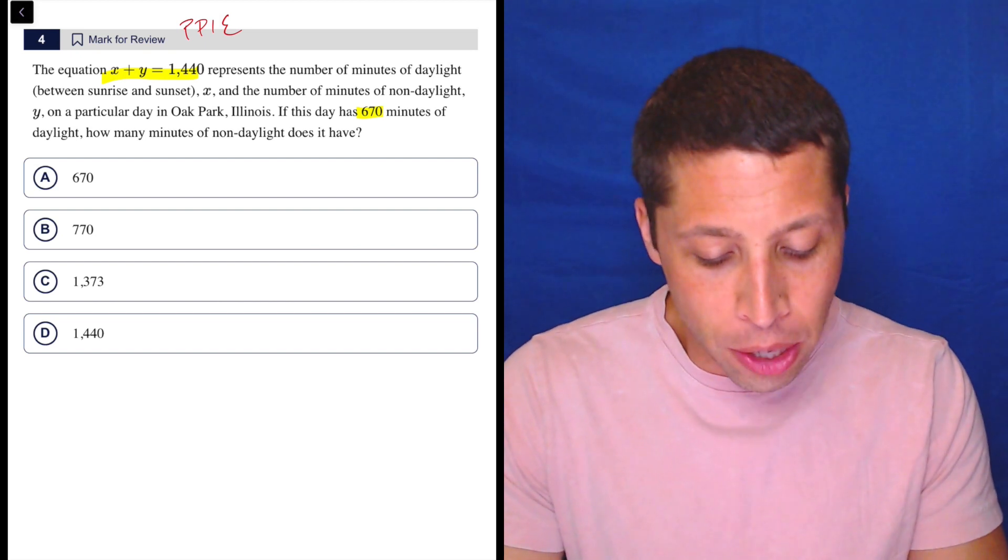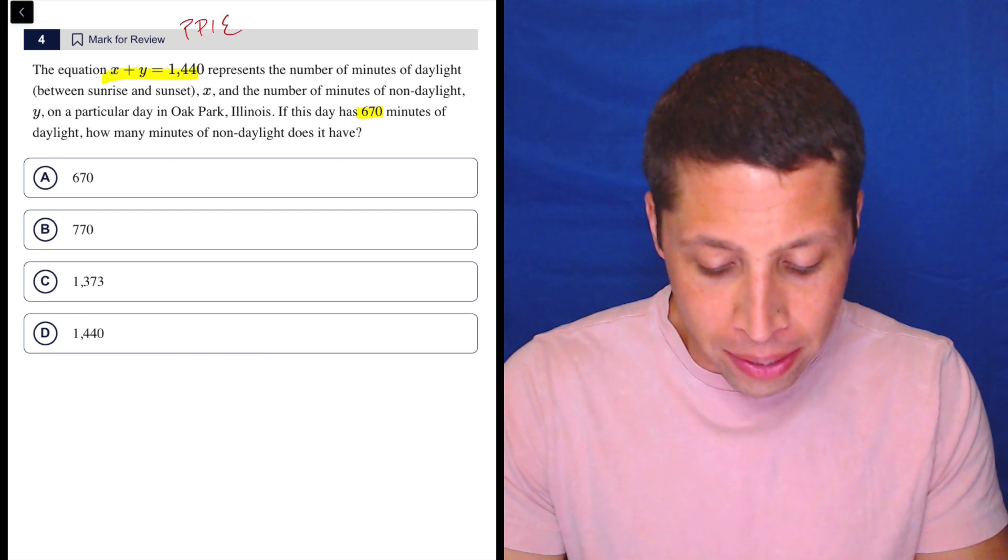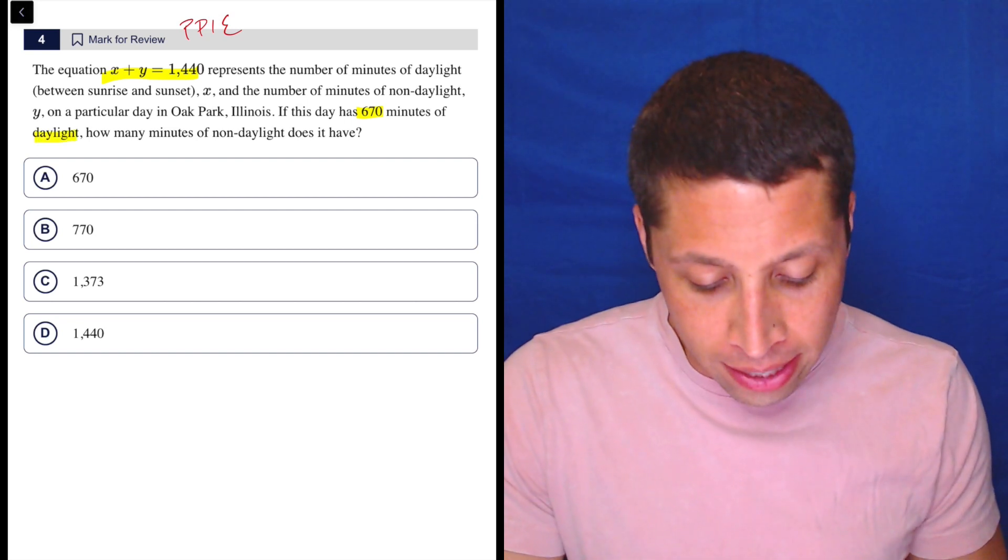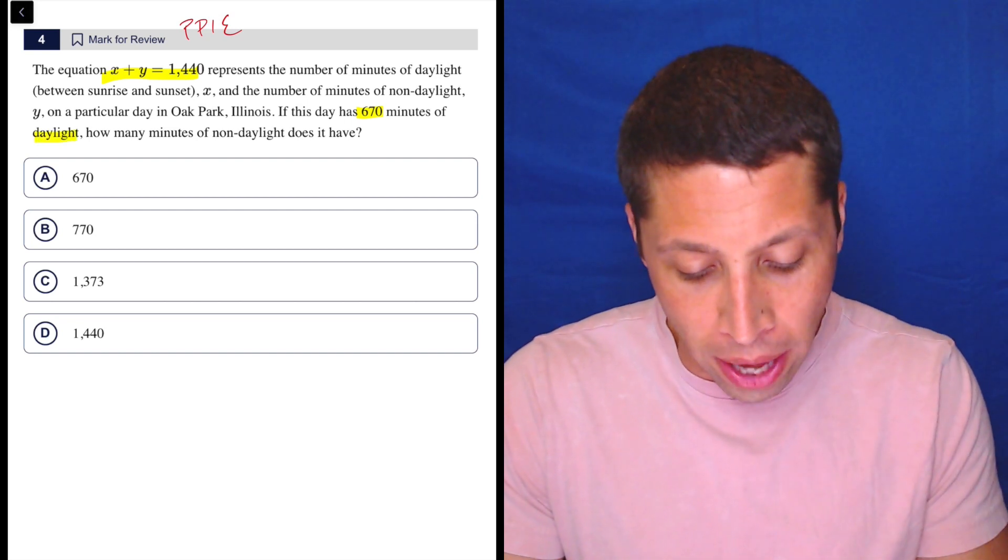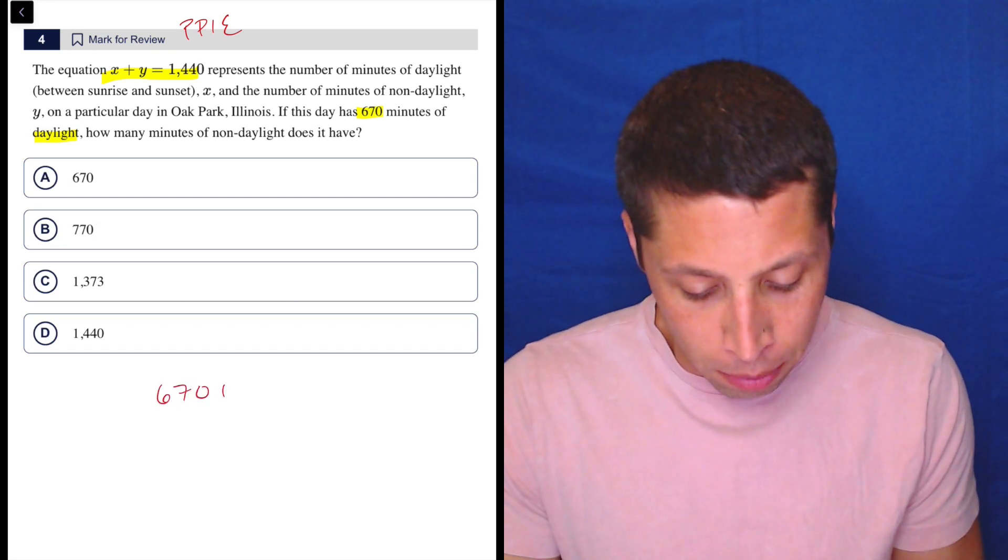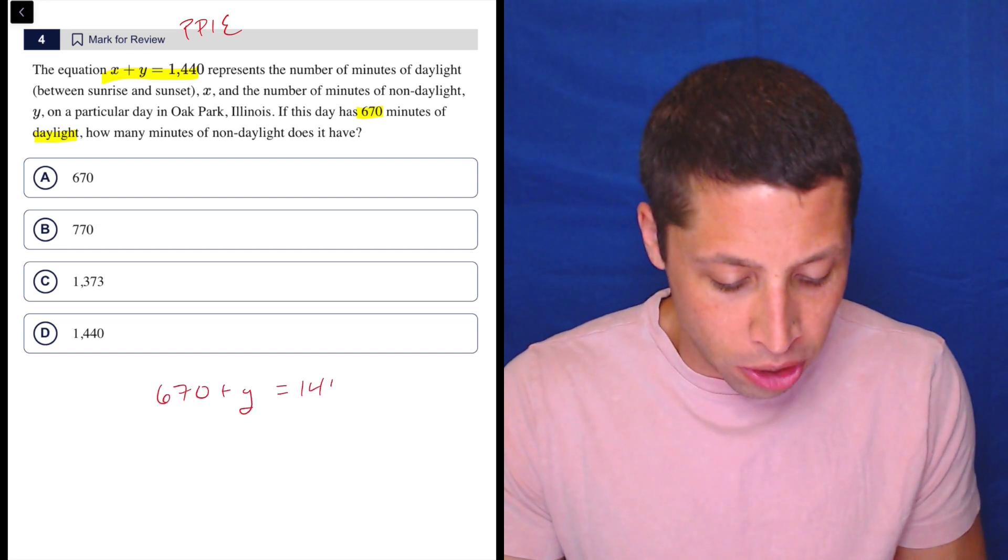We're gonna solve for X. So how would we know what this is? Well, 670 minutes of daylight. Well, X is the number of minutes of daylight, right? So, okay, let's just plug that in for X and solve. So 670 plus Y equals 1440.